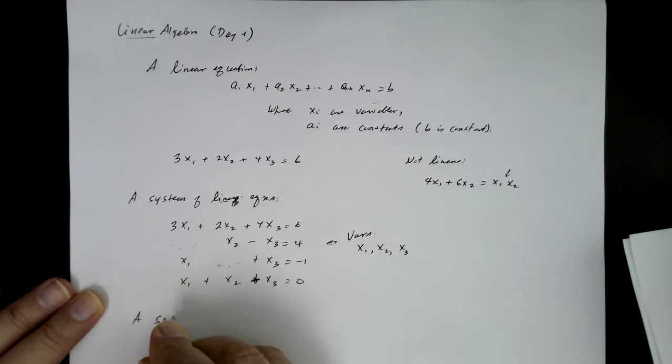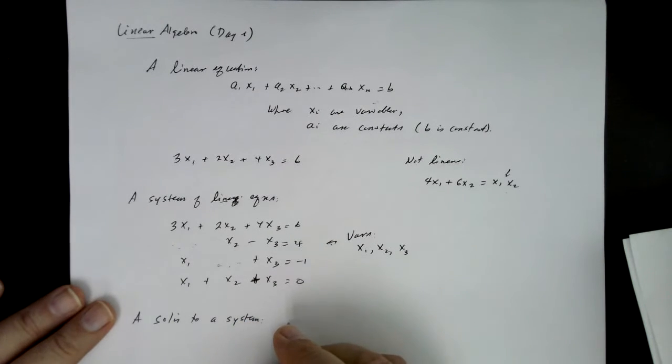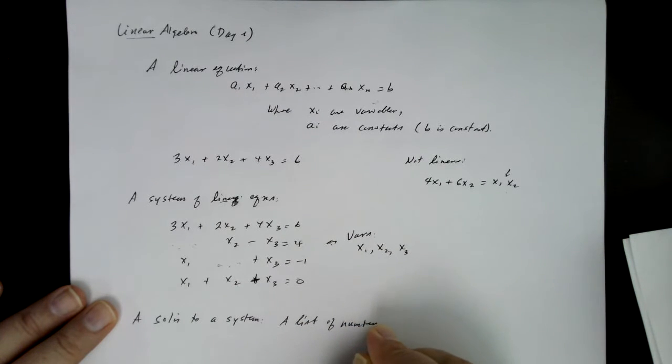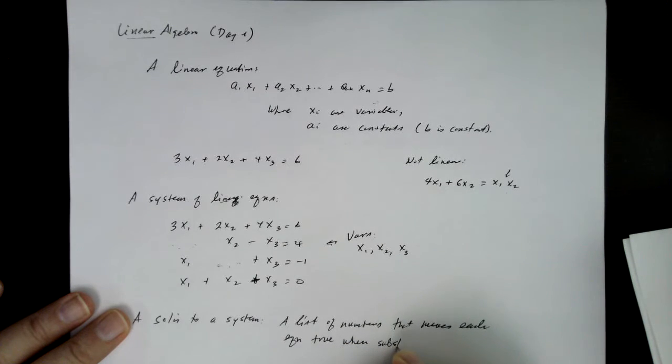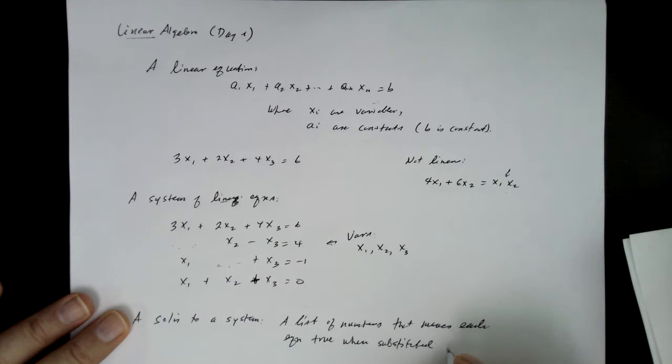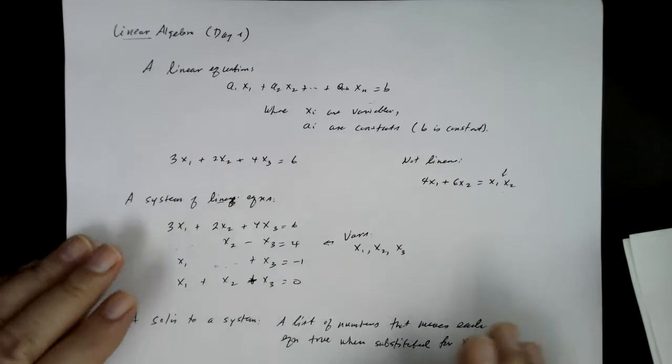So what is the solution to a system? It's going to be a list of numbers where the order matters, such that if you substitute each number in for each variable into the system, you get a true statement that makes each equation true when substituted for x1 through xn.